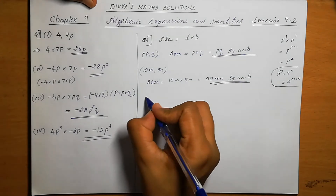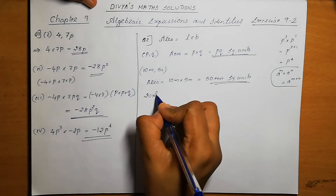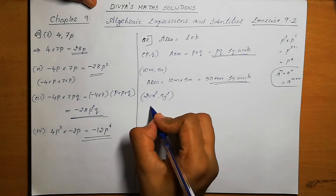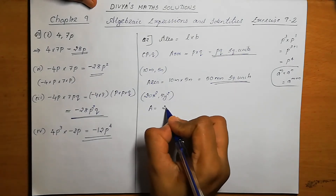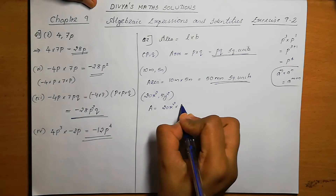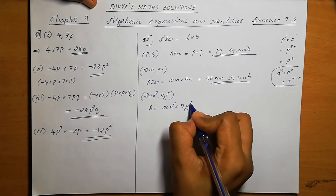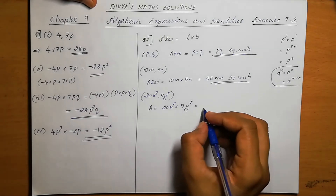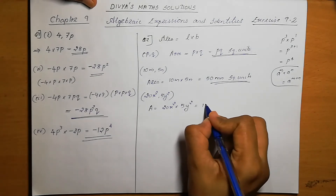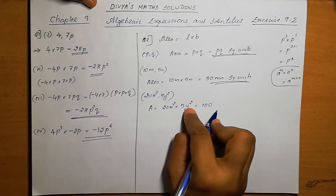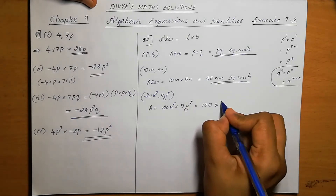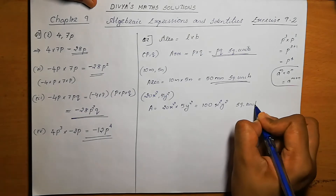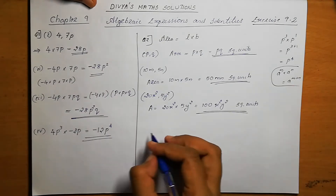Next one is 20x square and 5y square as the length and breadth. Area is 20x square into 5y square. Multiply the numbers: 20 into 5 is 100. x square into y square is x square y square. So the answer is 100x square y square square units.